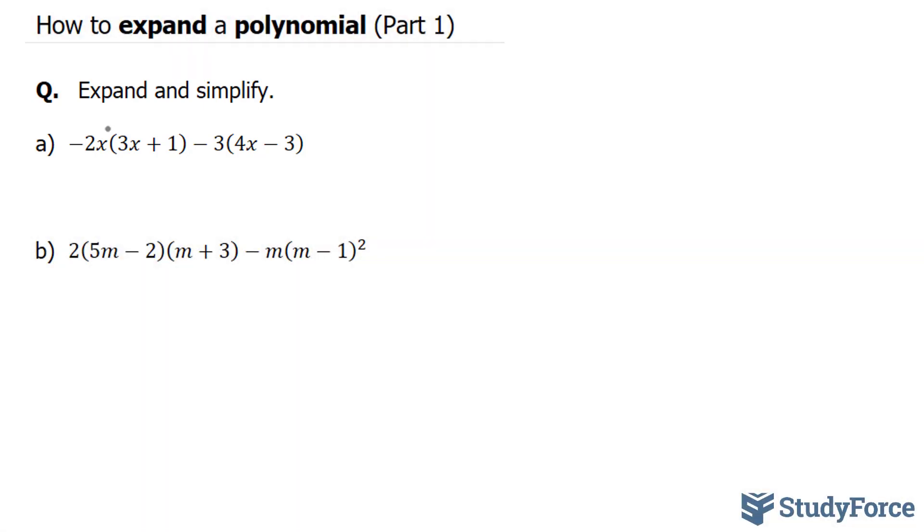To do this, we will use the distributive law, which tells us that if we have a monomial multiplied to an expression in brackets, we'll take this negative 2x and multiply it to the terms inside the bracket to its right.